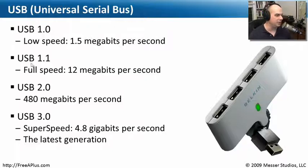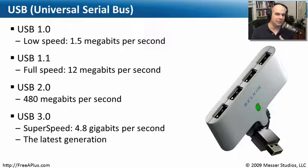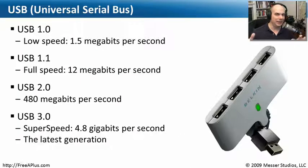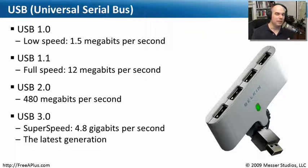Coming soon — and slowly being rolled out as the specification is finalized — is USB 3.0. This runs at what is officially called super speed: a blindingly fast 4.8 gigabits per second. USB 3.0 is the latest generation, and it's where we'll eventually plug all our external devices. As we get higher and faster hard drives and SSD drives that are all memory, we're going to need that kind of speed, and USB 3.0 is the technology that will allow us to do that.